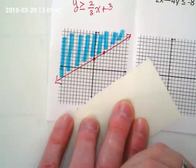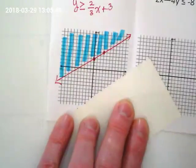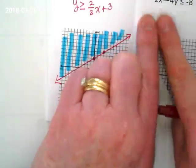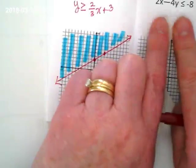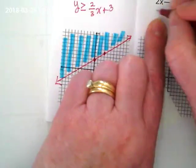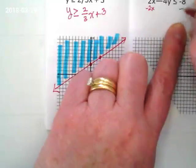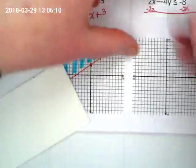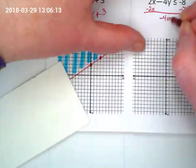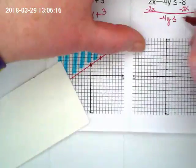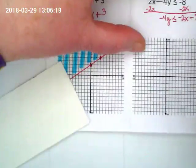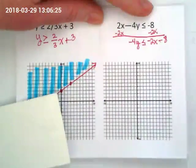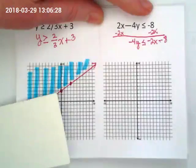The second problem needs to be simplified. It is not in y equals mx plus b form. It actually is in standard form—this is ax, by, and c. So we need to move what first? The 2x first, right? Kind of small because there's not a lot of space here. What we're left with on the left side of the inequality is negative 4y is less than or equal to negative 2x minus eight. Oops, sorry about that.